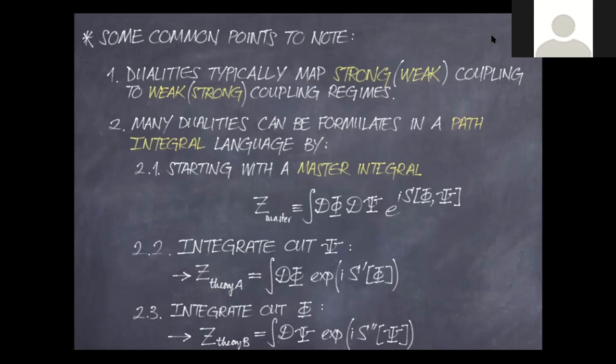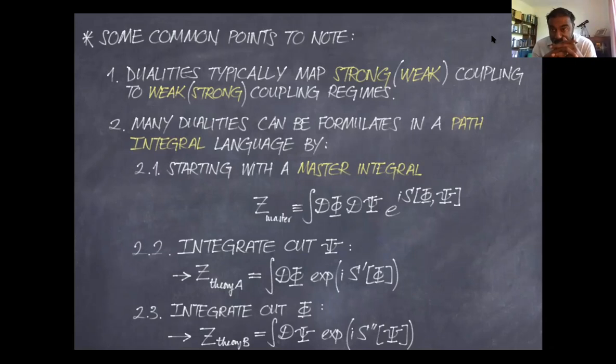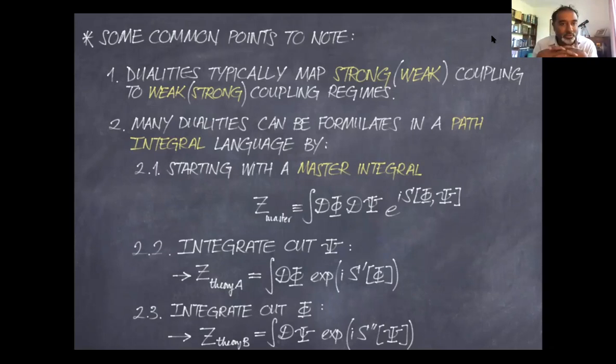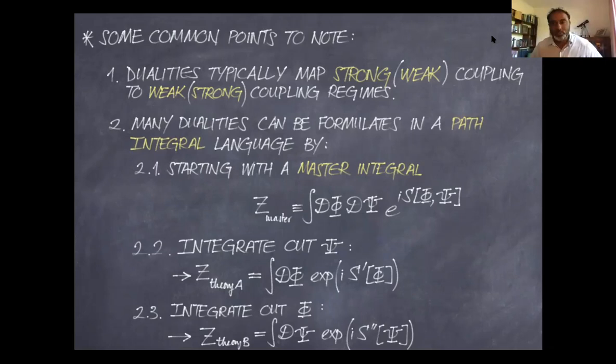In bosonization the theories have the same spacetime dimension. AdS/CFT is unlike those other examples — in electric-magnetic duality, bosonization, and T-duality, the theories get mapped within the same spacetime dimension. AdS/CFT is a different kind of duality: it's holographic in the sense that you start from some bulk and the dual theory is a reorganization of the bulk degrees of freedom onto the boundary, which is one dimension lower.